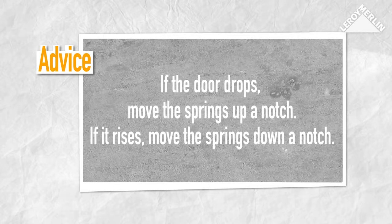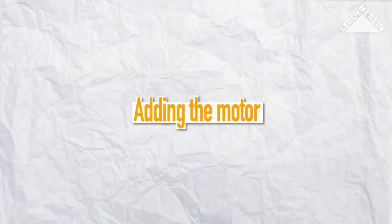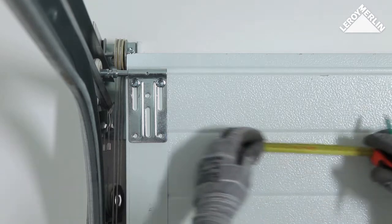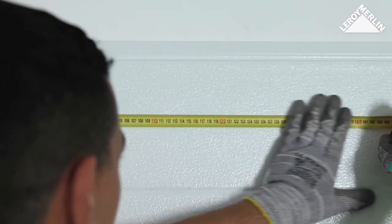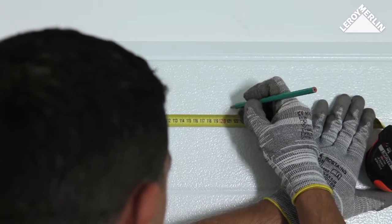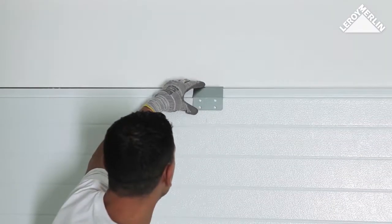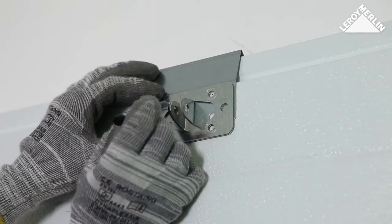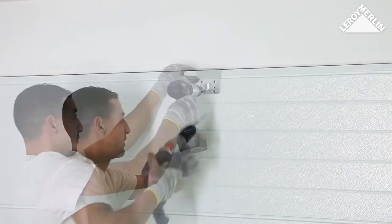Assemble the motor rail support: Mark the middle of the last door panel. Position the motor panel mounting plate and mark the drill holes. Drill slowly and then screw in place.